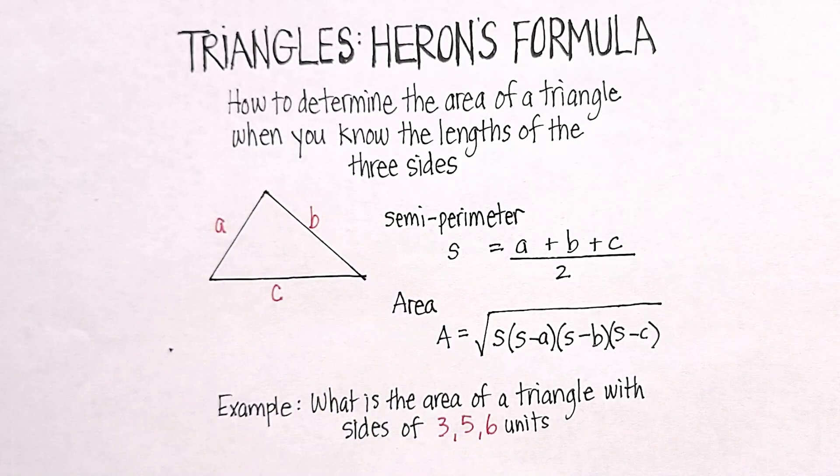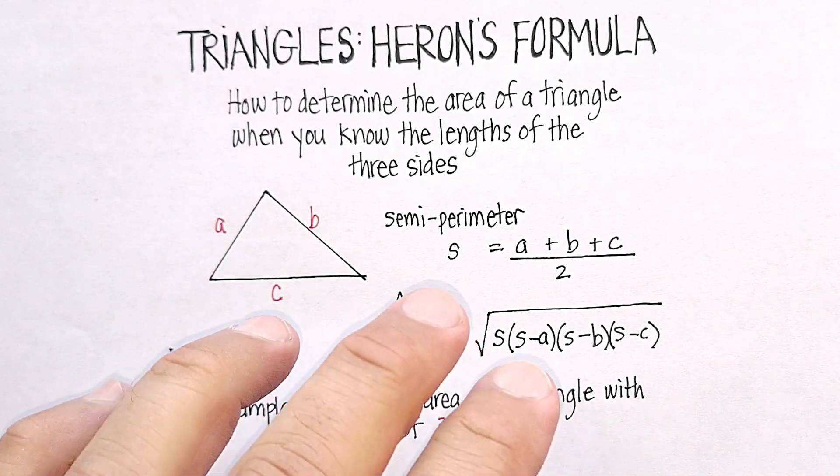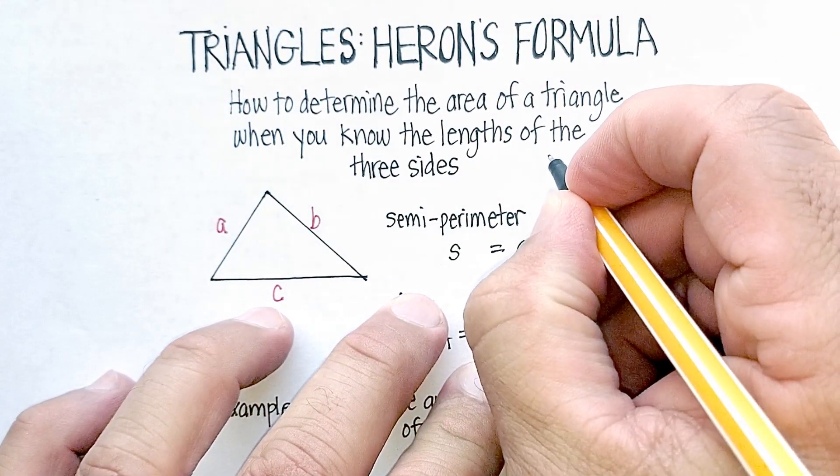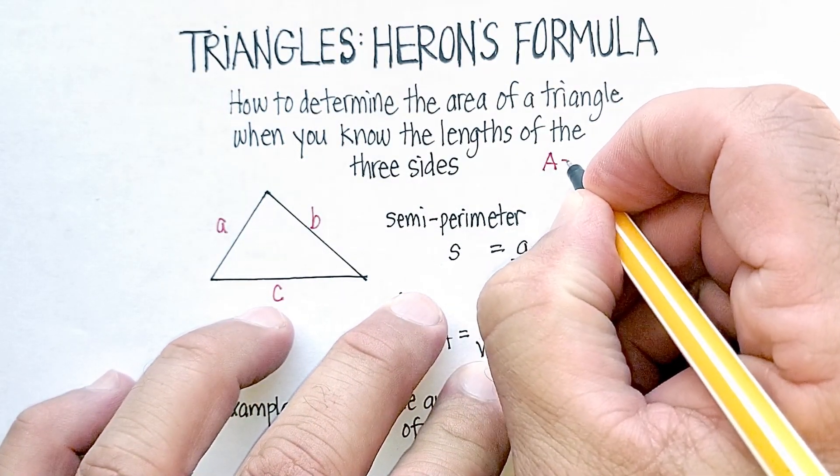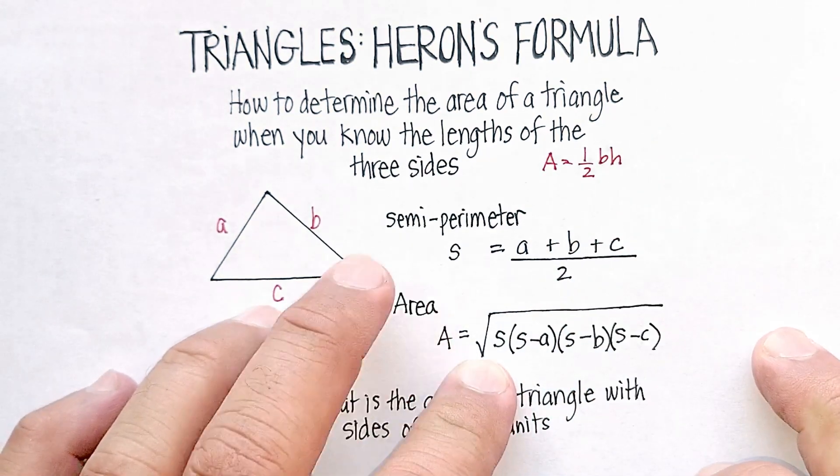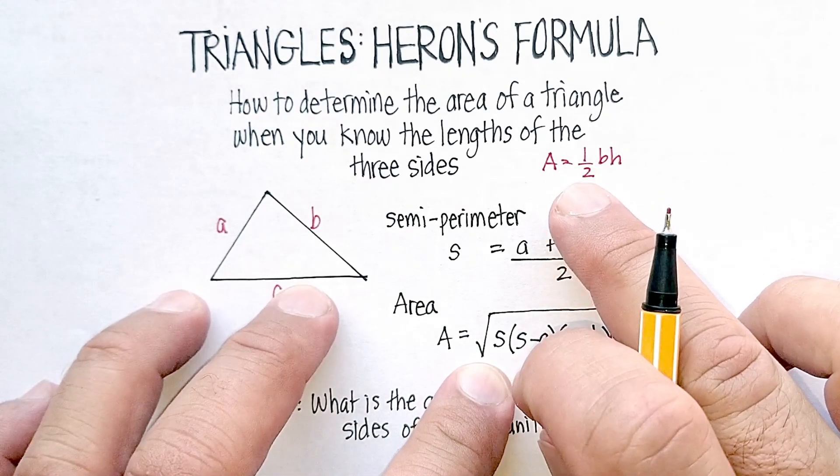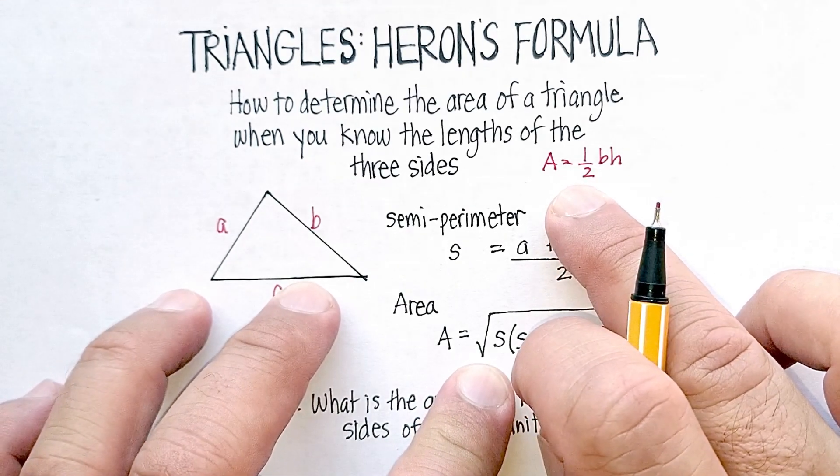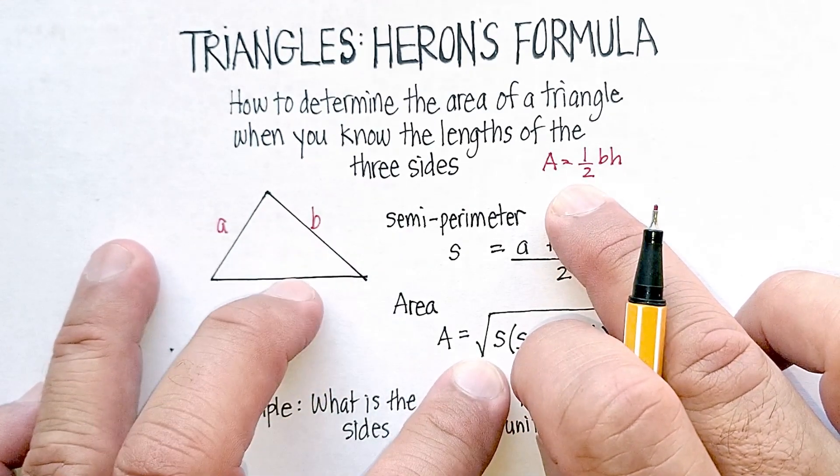Now most of you probably know the traditional formula that most people learn: the area of any triangle is equal to one half the base times the height, right? Except that's not always readily apparent whenever you have a triangle like this.